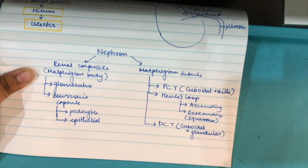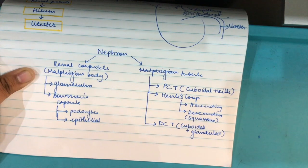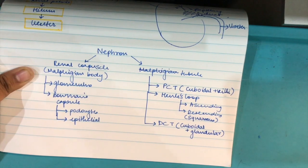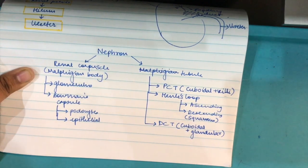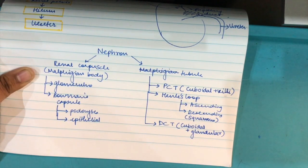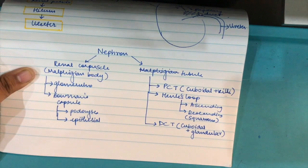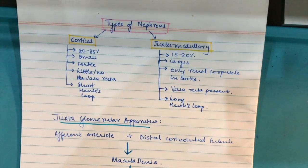Then Henley's loop - it is made up of simple squamous epithelium. And DCT is also made up of cuboidal epithelium and it's glandular. It's glandular because it secretes some potassium and hydrogen and ammonium ions into the urine which is formed and this is to maintain the osmolarity of the kidney.